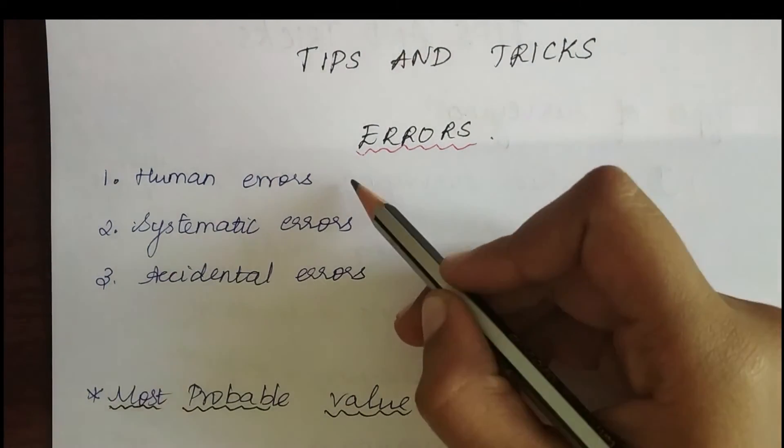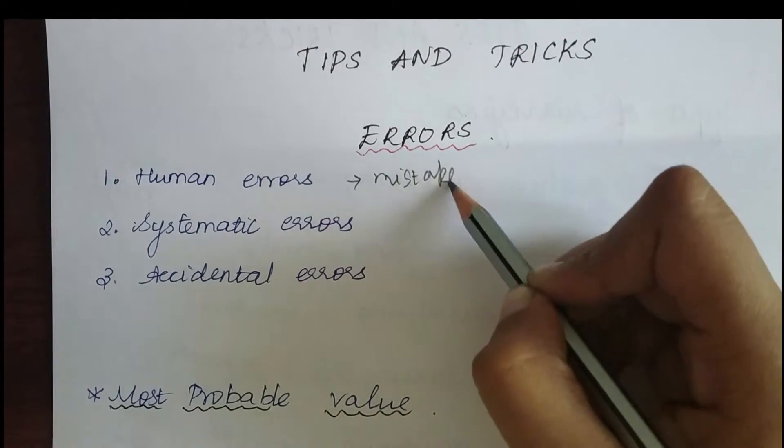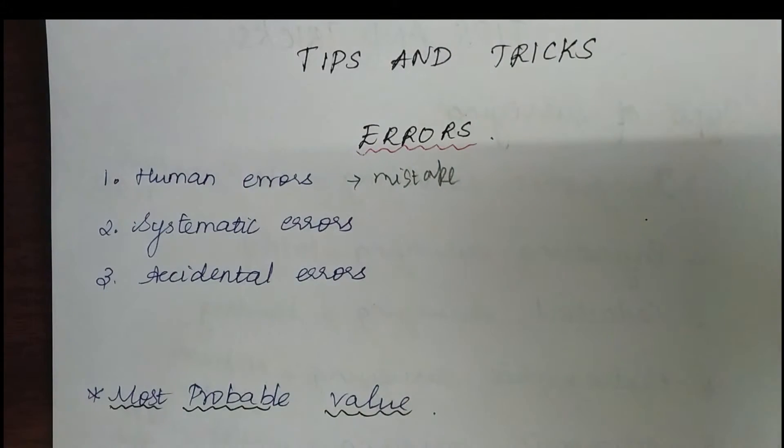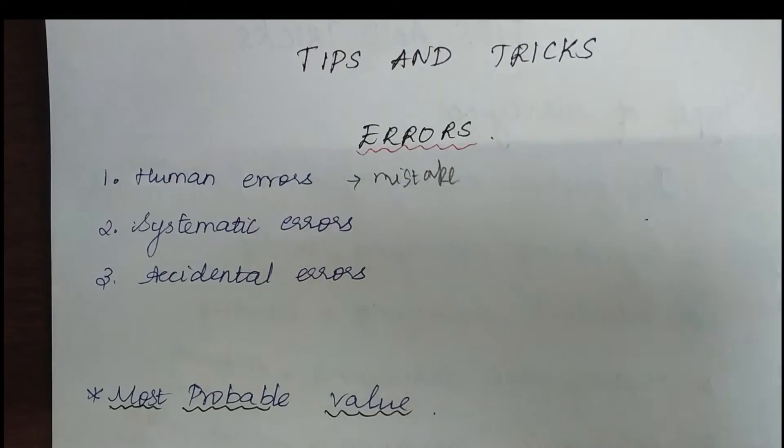Human errors are the mistakes committed by humans while taking readings from a surveying instrument. Systematic errors are errors committed by manufacturers while manufacturing any surveying instrument.